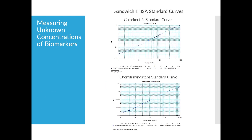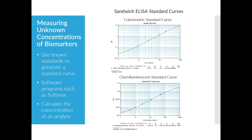Both colorimetric and chemiluminescent assays use known standards to generate a standard curve to measure the unknown concentration of an analyte in samples. Depending on the kit, this is accomplished by using software programs with four or five parameter logistic curve fit algorithms. Both types of kits give the user measurements of the analyte in a very similar way.